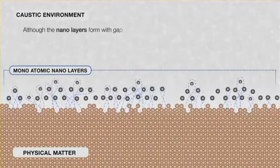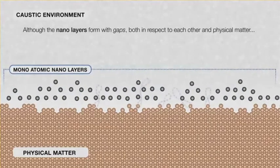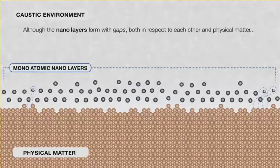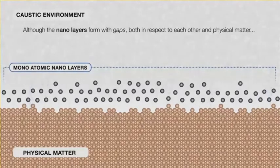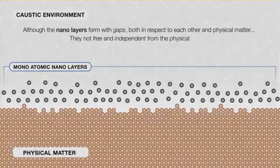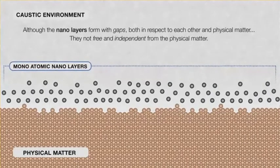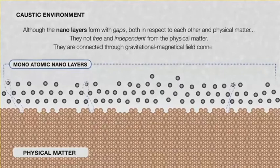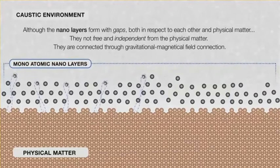Although the nano layers form with gaps both in respect to each other and to the physical matter, they're still connected to the matter but have repositioned themselves. They're not free and independent from the physical matter — they are connected through a gravitational-magnetical field connection.